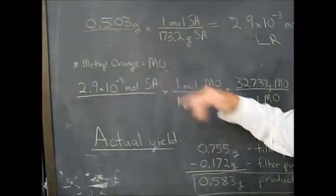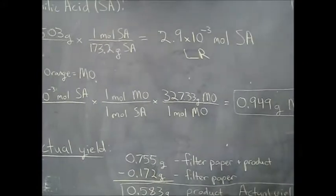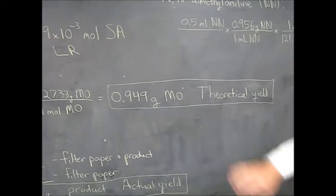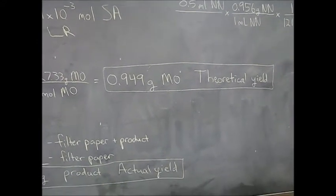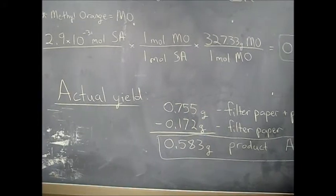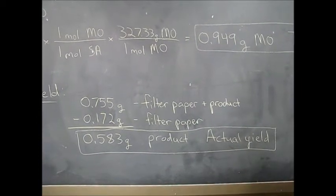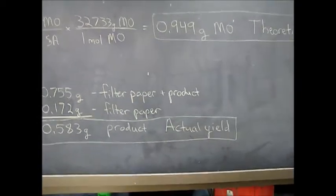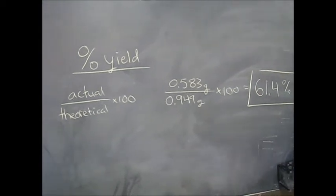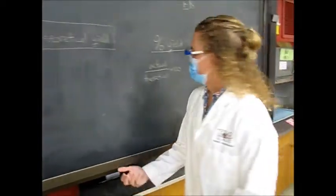So now we'll proceed with our limiting reagent to find our theoretical yield. And just a note, we're going to call methyl orange MO. So we have our moles of sulfanilic acid. We have a mole ratio of just 1 to 1. And then we'll have our molecular weight of methyl orange. Multiply all that out. And this is the theoretical yield we would expect to get for methyl orange if everything went perfectly. So as far as our actual yield went, the mass of our filter paper with our product on it was 0.755. And then we weighed our filter paper and it was 0.172. So you subtract those and you get 0.583 for our actual yield. And lastly for our percent yield, just actual over theoretical. So 0.583 over 0.949 times 100. And then you'll get 61.4%. So not the best, but definitely not terrible.